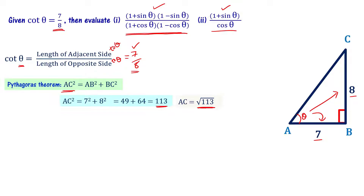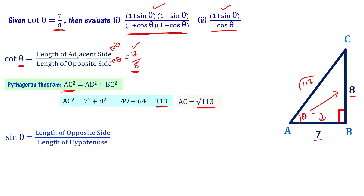AC value is square root of 113. Now we can write the trig values. Sin theta is length of opposite side to theta divided by length of hypotenuse, which is BC by AC. BC value is 8, so sin theta equals 8 divided by square root of 113.